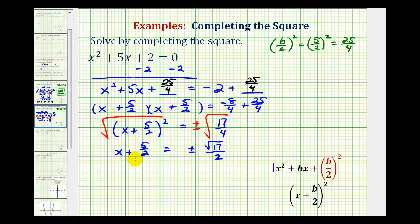Our last step is to subtract 5/2 from both sides. So x = -5/2 ± √17/2.